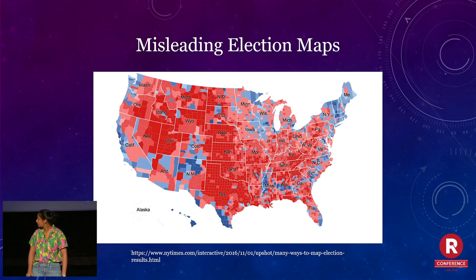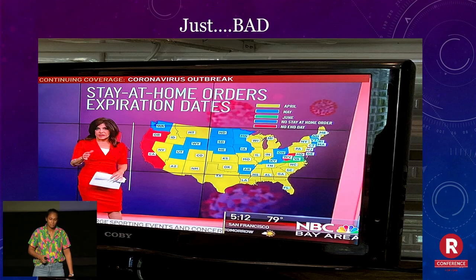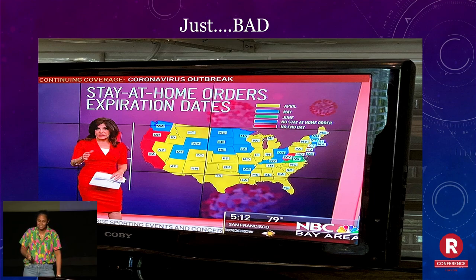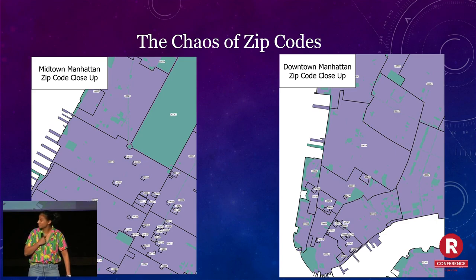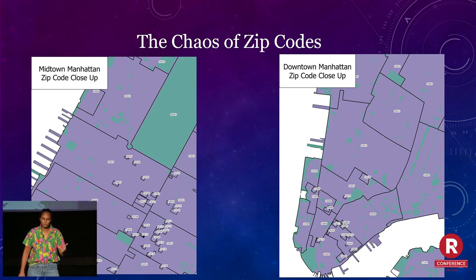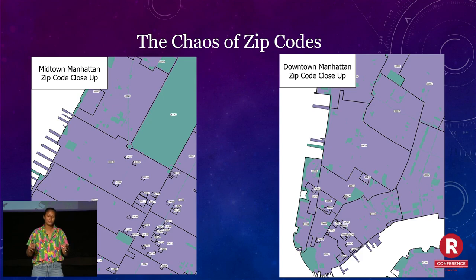And the New York Times agrees — I have the source at the bottom — they say this is a misleading map. This next one is just bad: blue appears twice in the legend, the colors represent months and 'no stay-at-home orders,' every single state is labeled — I got a huge headache when I saw this map. And I'm going to bring up my personal beef with zip codes. Zip codes are a terrible geographic boundary to use — the Empire State Building has its own zip code. They're not based on anything except mail routes. It's better to use census tracts, block groups, or neighborhood boundaries instead.